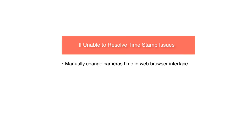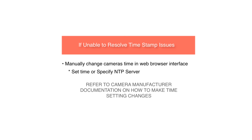If all else fails, you can manually change the camera's time through the camera's web interface. You may be able to either manually set the time or specify an NTP server through the web browser interface. Refer to the camera manufacturer's documentation on how to make time-setting changes. You will most likely need to disconnect and reconnect the camera to ExactVision in order for the time changes to take effect.